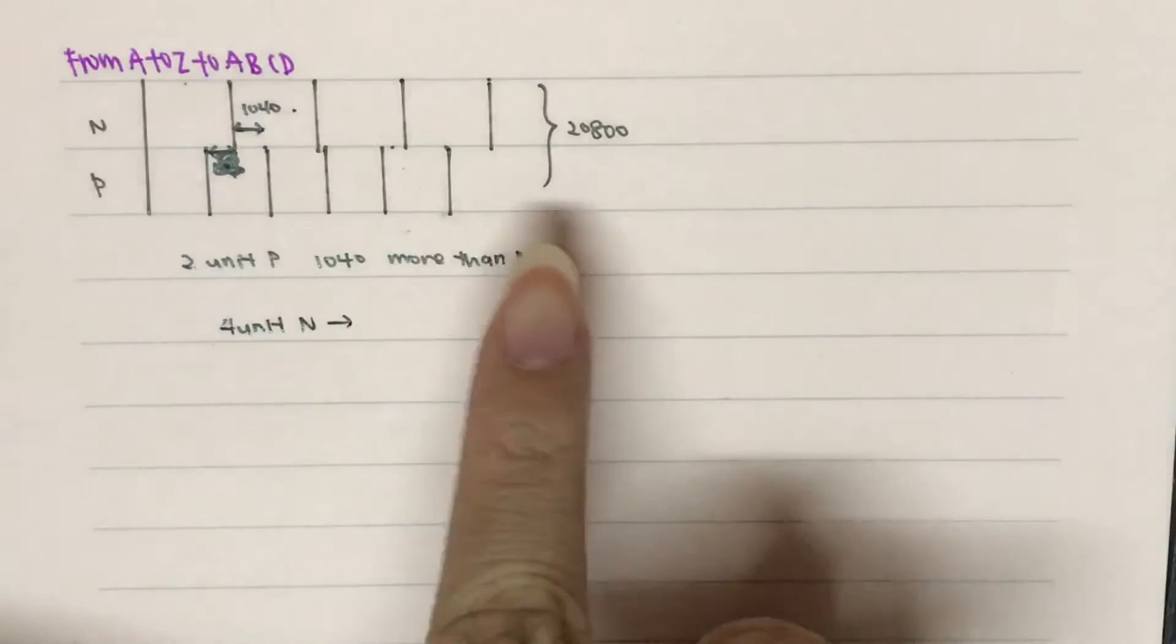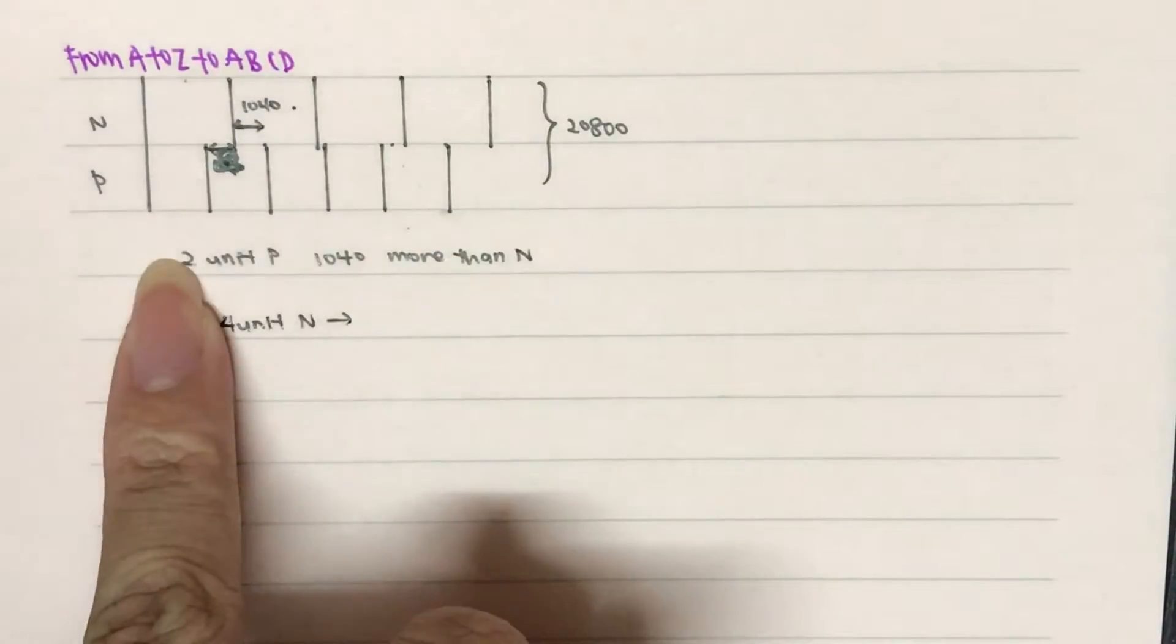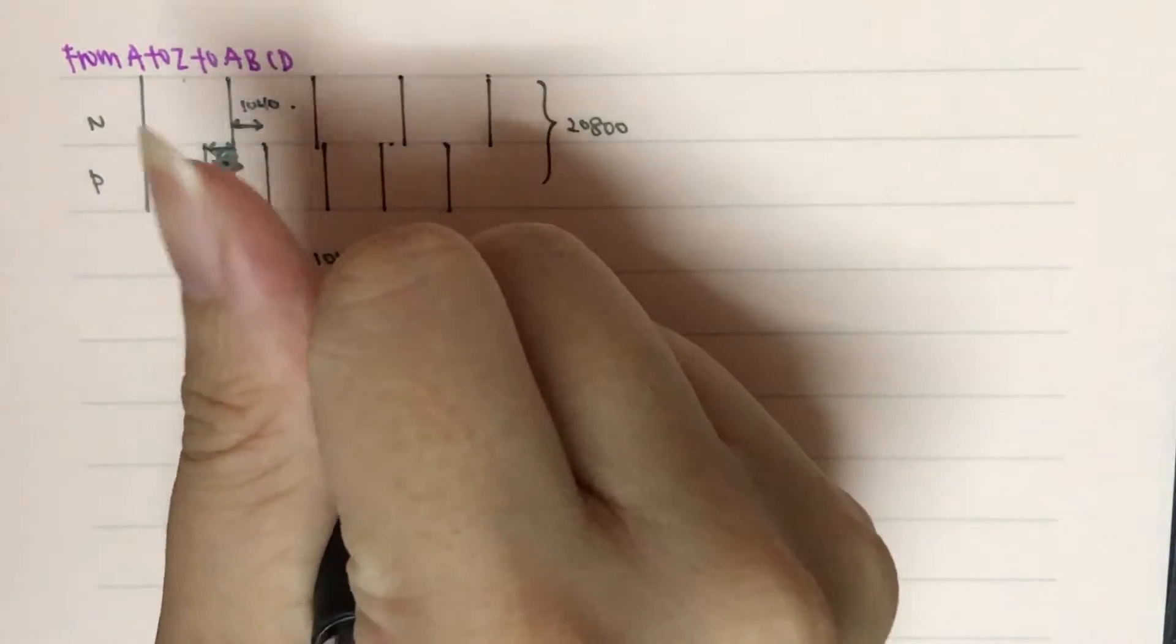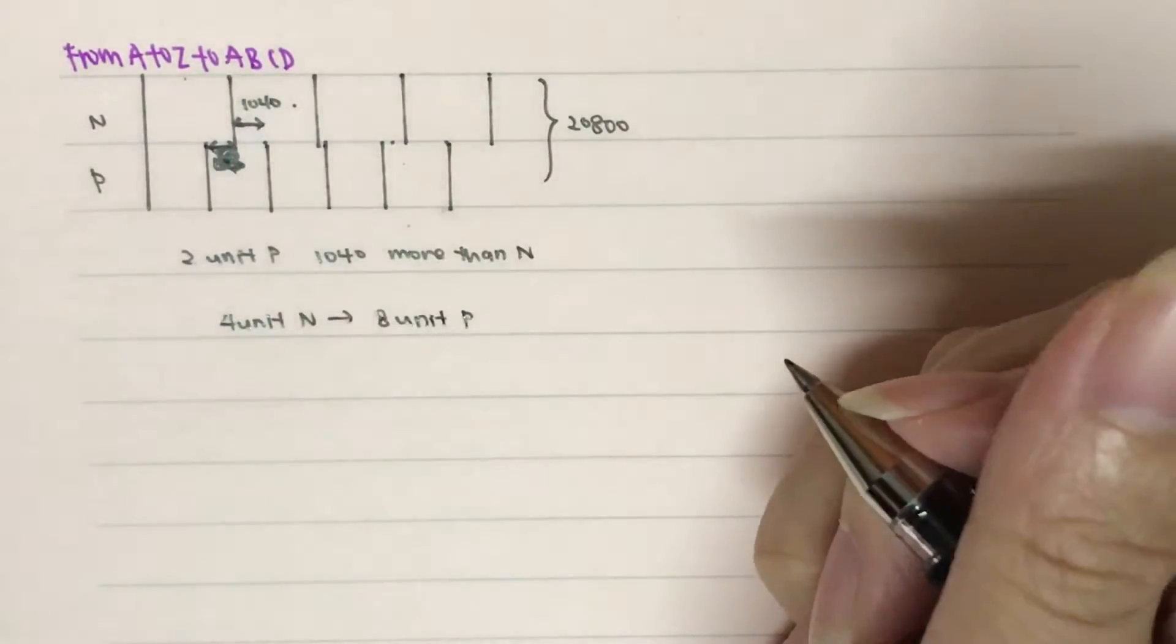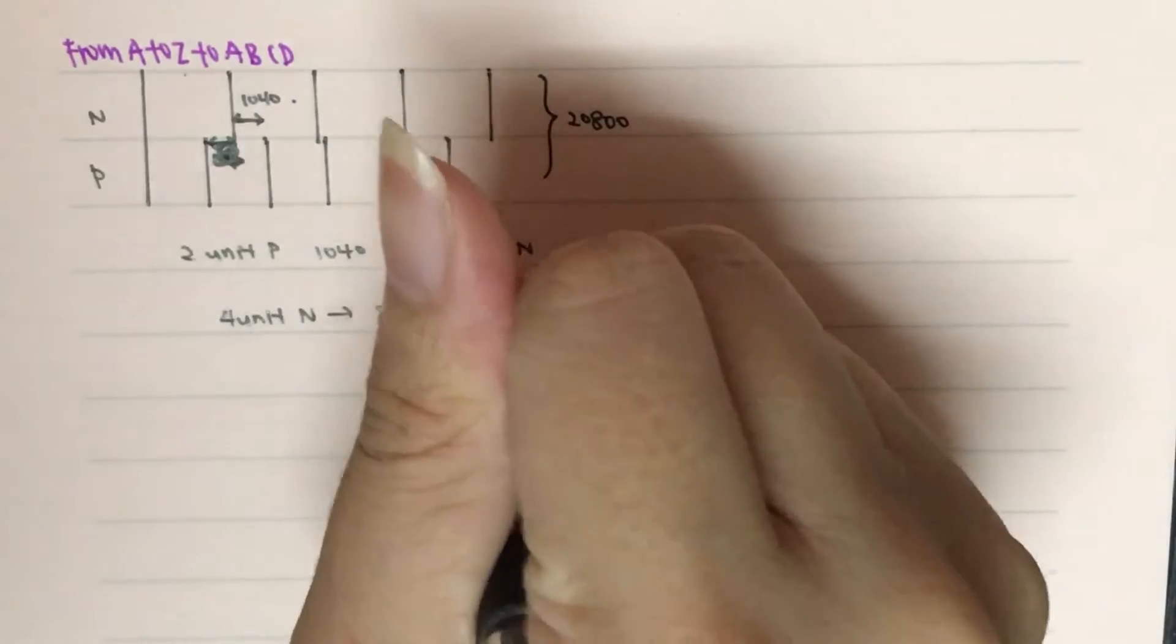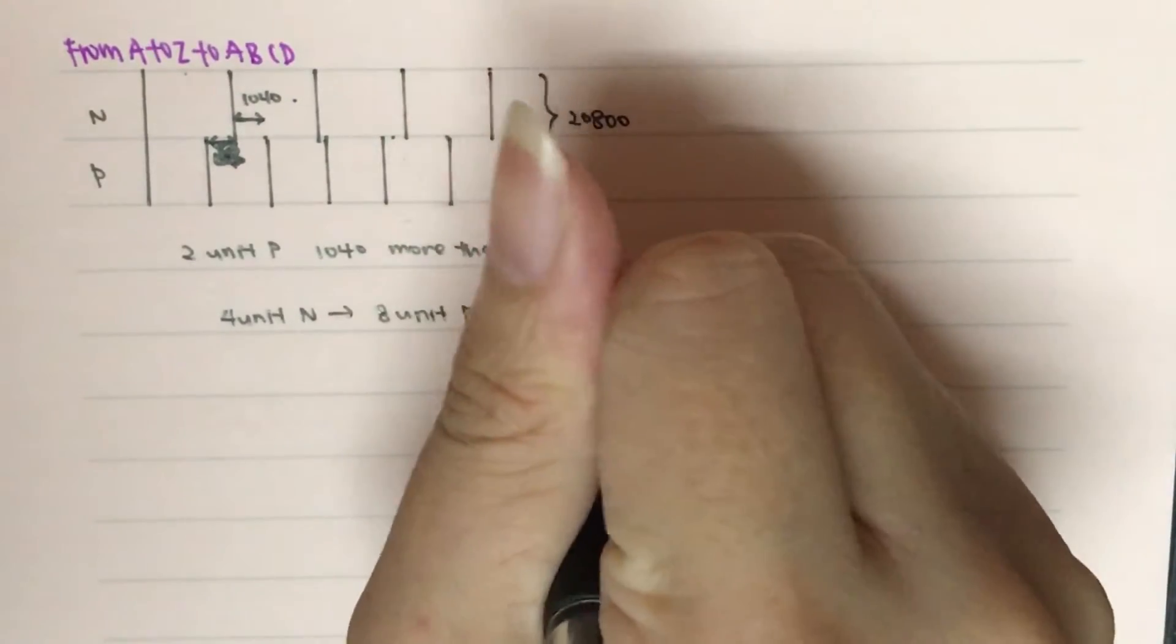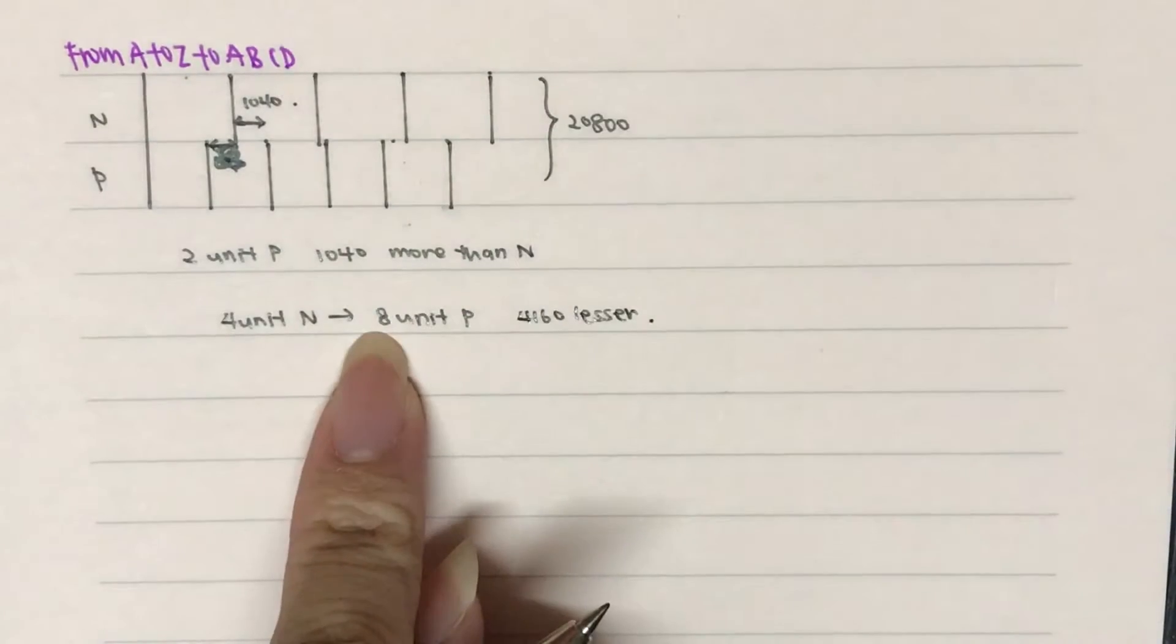What does this imply? I times four over here, I times four over here. So, compared to eight units of P, this part is actually 4,160 less. So this is 4,160 less than this.